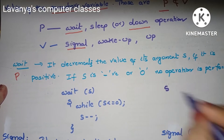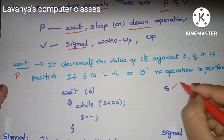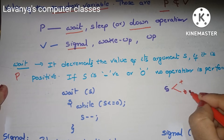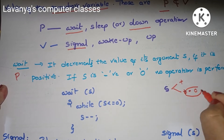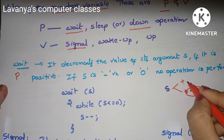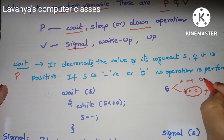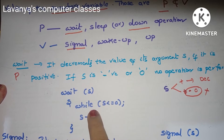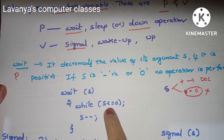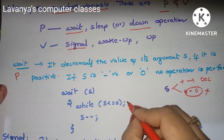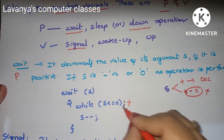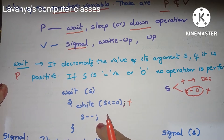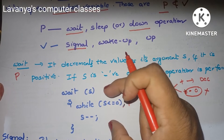The code for wait is: while S less than or equal to zero, do nothing. If S is positive, decrement it. So this is the code for the wait operation — we will also explain this with an example.